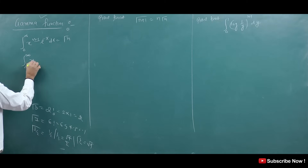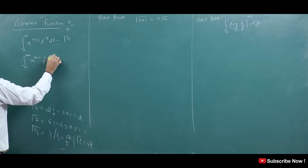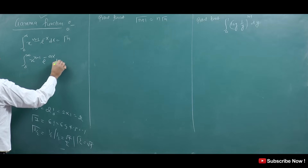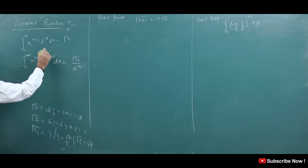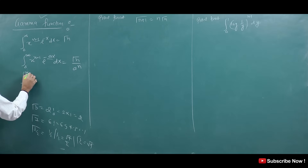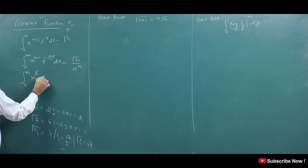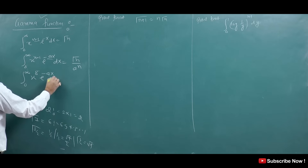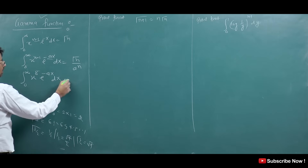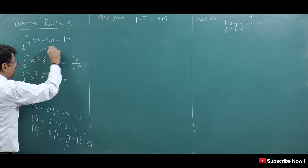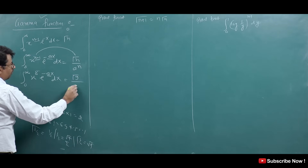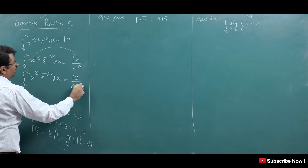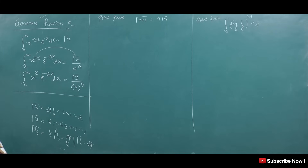There is a general formula: ∫₀^∞ x^(n-1) e^(-ax) dx = Γ(n) / a^n. So if you are asked ∫₀^∞ x⁸ e^(-4x) dx, the power 8 gives n−1=8, so n=9, that is Gamma(9). And here a = 4, so a^9 = 4^9. This answer will come. We can solve this very easily by the help of Gamma.